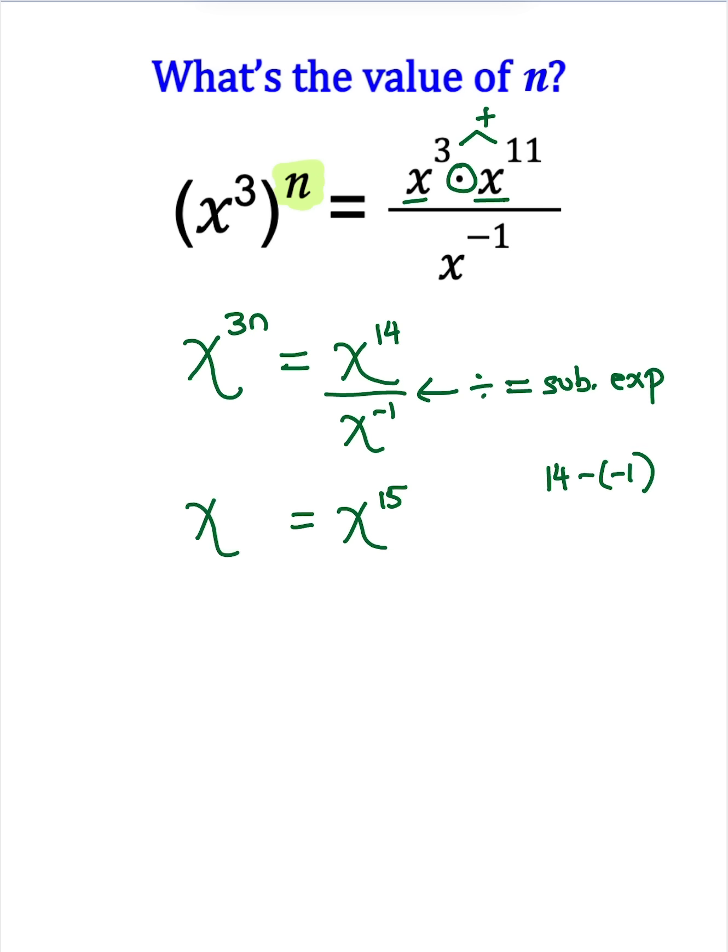And on the left side, I still have x to the 3n power. So now I have the same base. I have x being raised to the 3n power, and this is stating that it's equal to that same base x being raised to the 15th power.